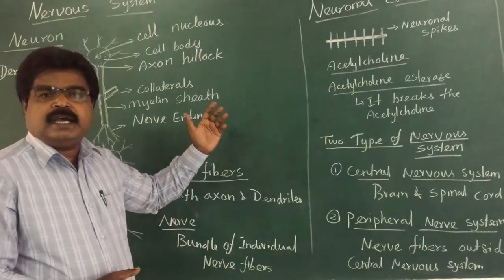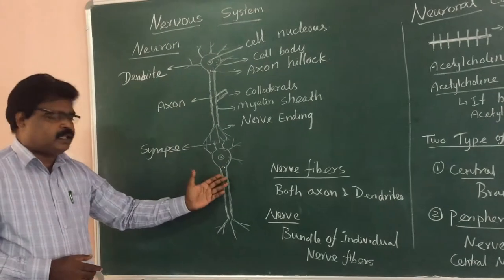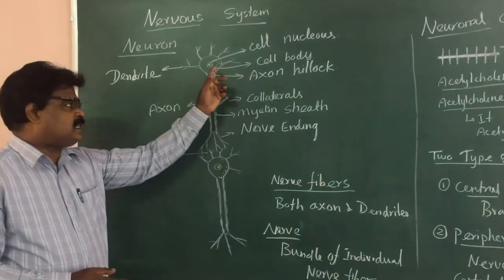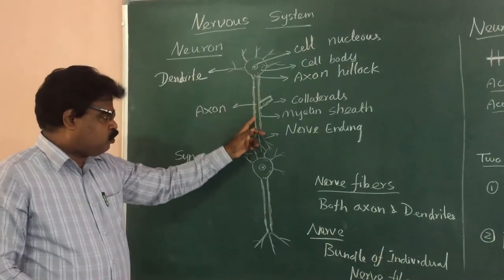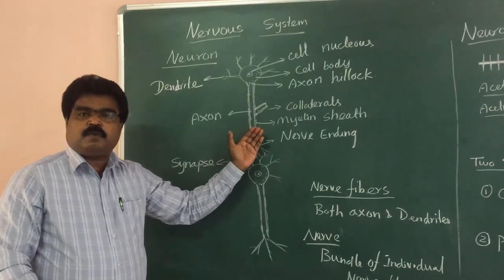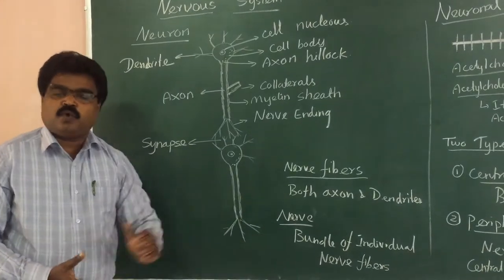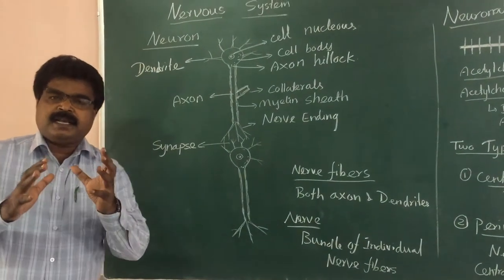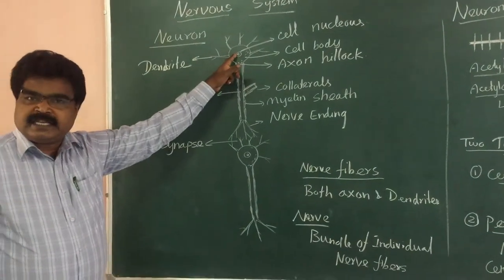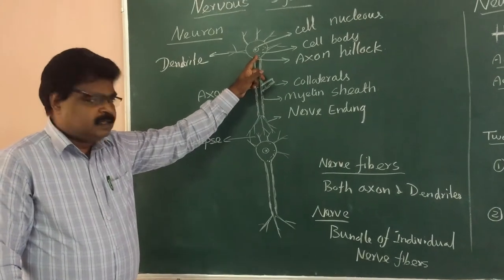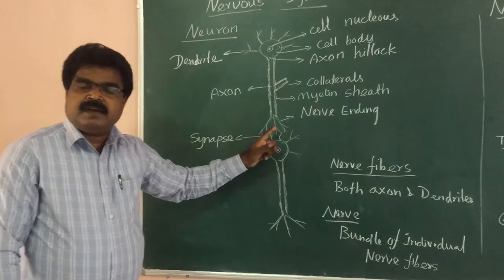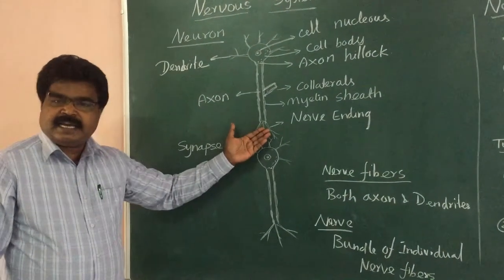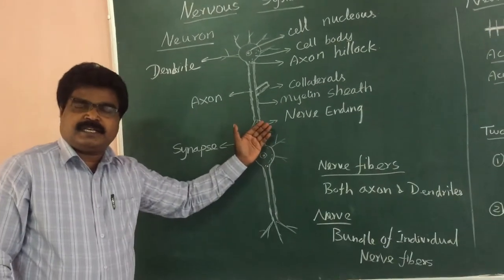Now we will see how the action potential transfers from one neuron to another. An earlier theory stated that the action potential generated in one neuron, when excited, is transmitted through the axon, and when it reaches the nerve end, the electrical potential excites the nearby neuron. However, a later theory states that it is not electrical in nature — there is a chemical involved. When the action potential reaches the nerve ending, a chemical called acetylcholine is generated.